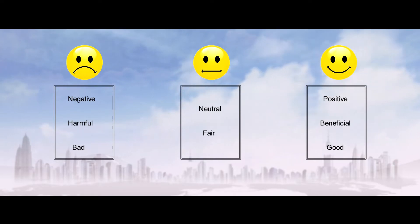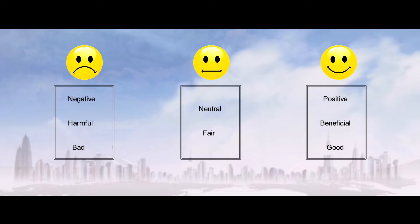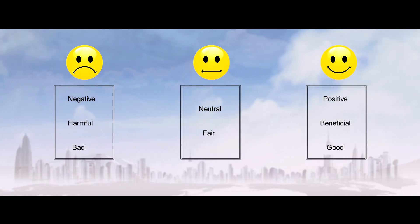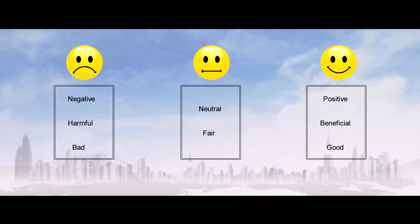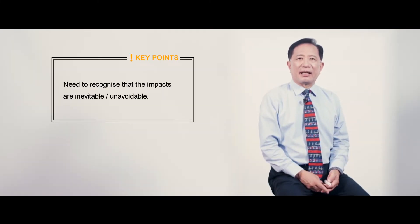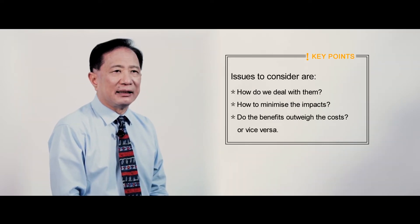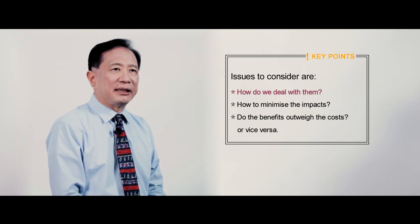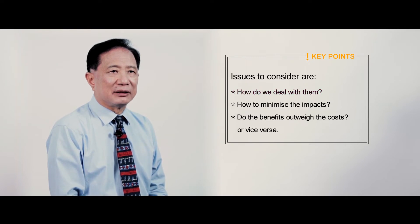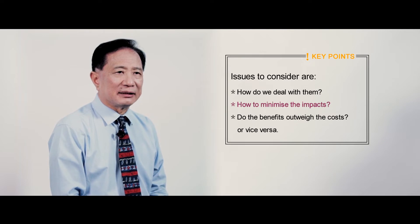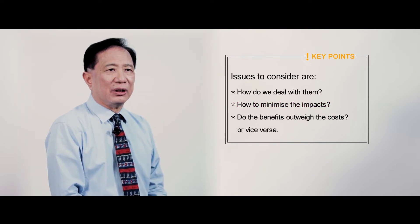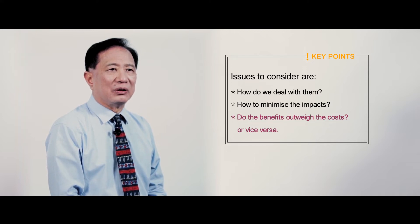When we look at the nature of the impacts, it could be negative, it could be neutral, or positive. If it's negative it means these impacts are harmful and bad. If it's neutral then the impacts could be fair — it's okay. If it's positive then it will be beneficial and good. We must recognise that they are inevitable and unavoidable. So what are some of the issues we need to consider? How do we deal with these impacts? How do we minimise the impacts, particularly the negative ones? And then we need to ask ourselves: do the benefits outweigh the costs, or vice versa?